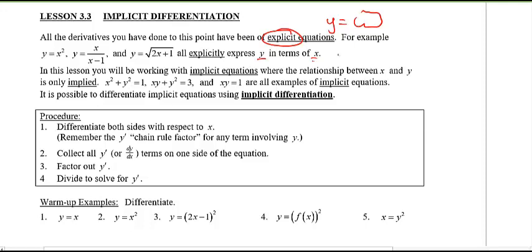However not always is this the case and in this lesson you're going to be working with what we call implicit equations where the relationship between x and y is only implied or when the x and y's are actually mixed together. So when I have something like this x squared plus y squared equals 1, you know this is the equation of circle but it's implied that y is a function of x. Similarly xy plus y squared equals 3, that y variable here is a function of x. And same thing xy equals 1. These are all examples of implicit equations.